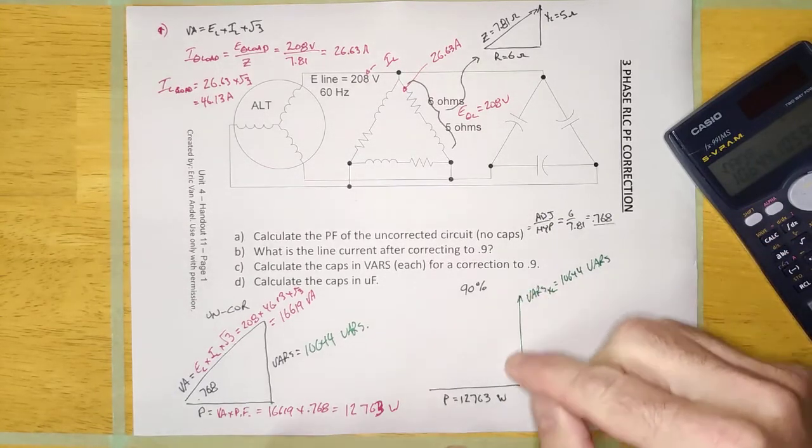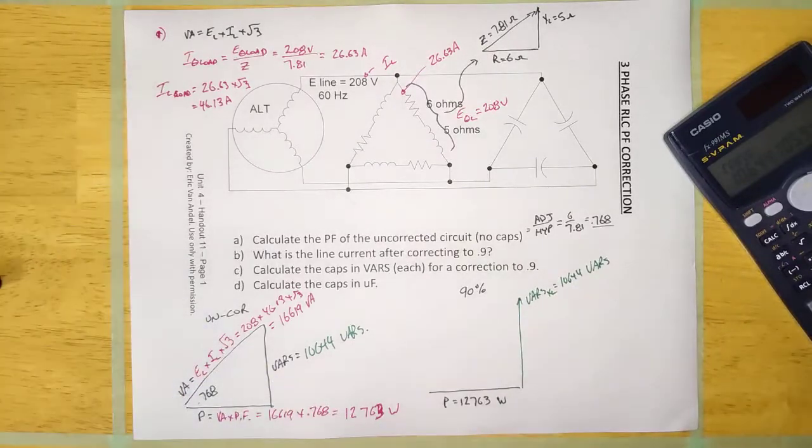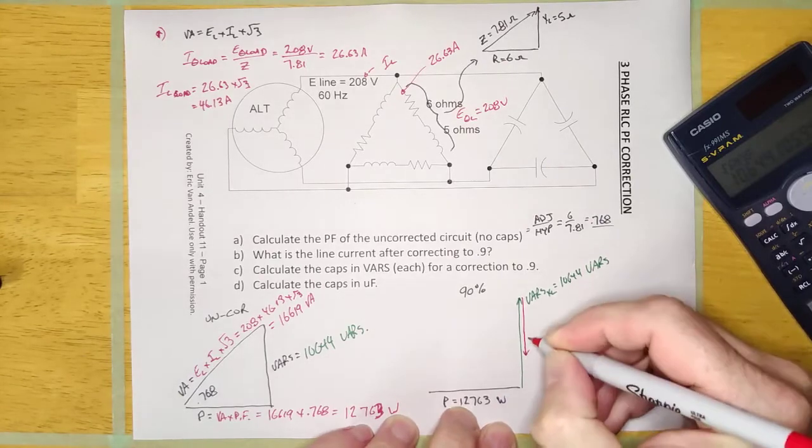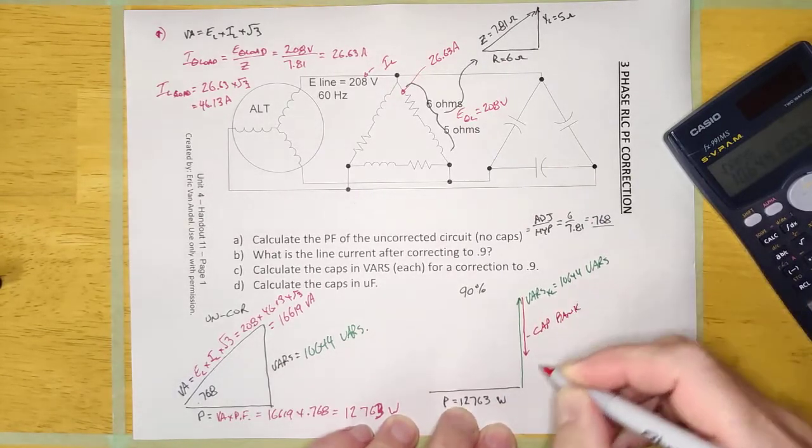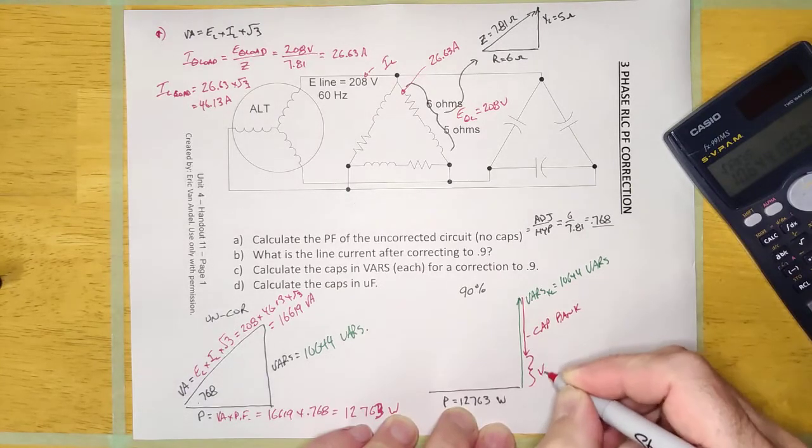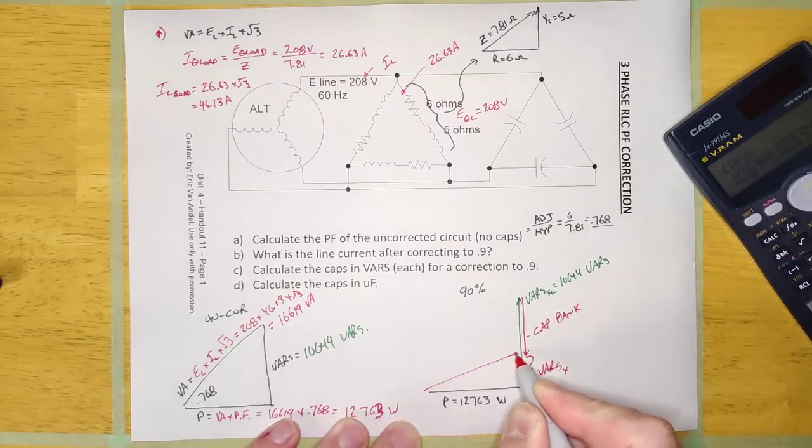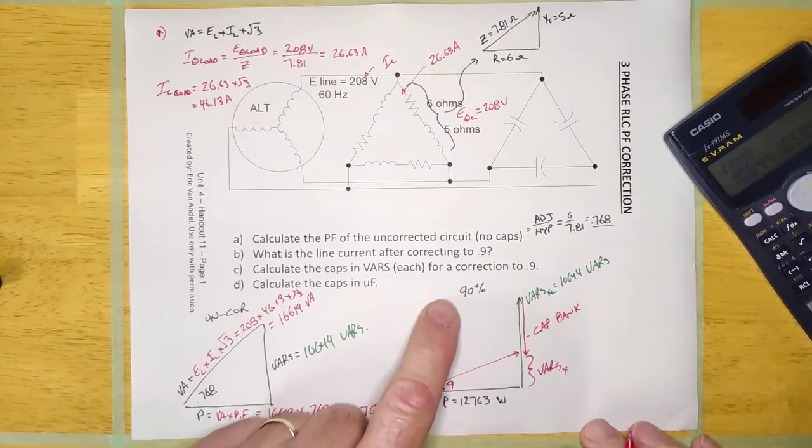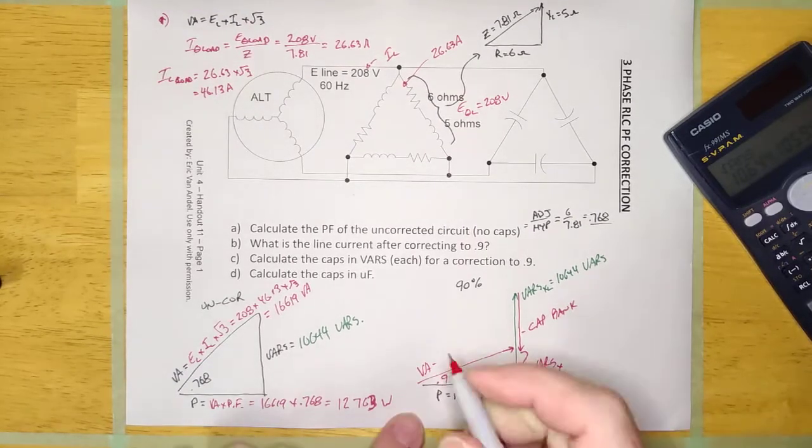And if I was correcting the unity, guys, my capacitor bank would be that old bit. But I'm not correcting the unity. I'm correcting 90%, so my cap's going to take care of some of that. This is going to be my cap bank. And this is going to be VARS X. And this is going to be VARS XL. It's going to be VA. And this is going to be the 90% that I'm trying to correct to. No different than single phase now.